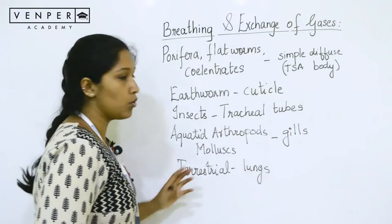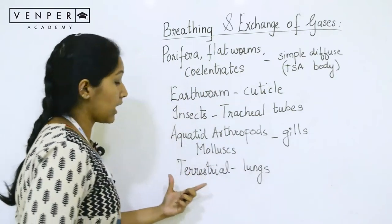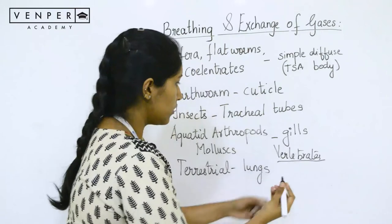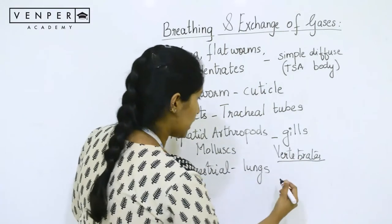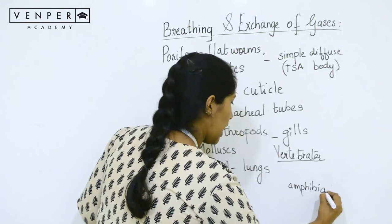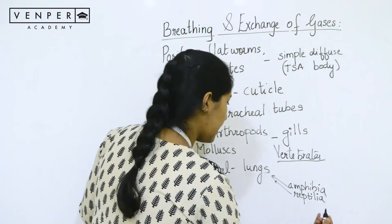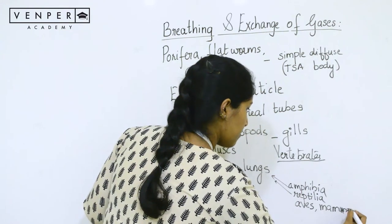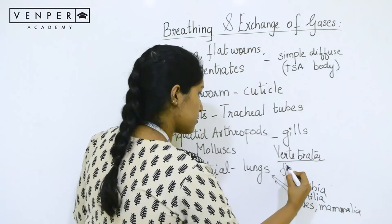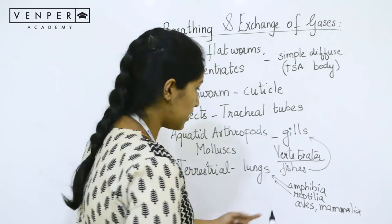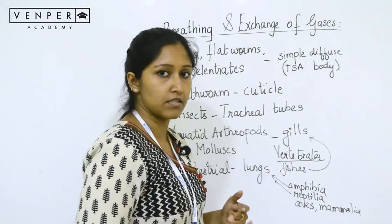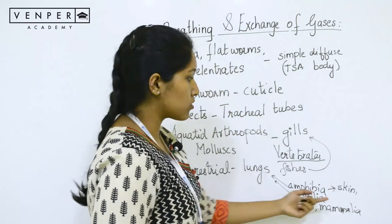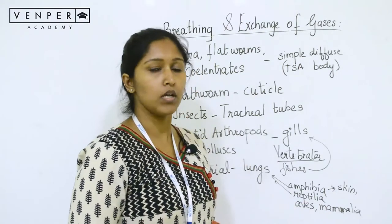This is in general how respiration takes place across kingdom Animalia. When you consider vertebrates, the lung is used by amphibia, reptilia, aves, and mammalia. Fishes use gills. In mammals, the respiratory system is very highly developed. In amphibia, you can also see the skin or the buccopharyngeal apparatus used for respiration.